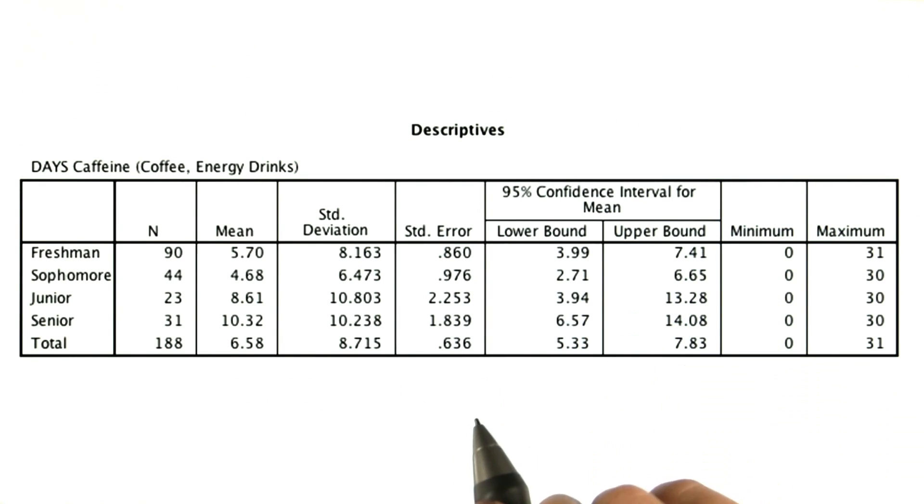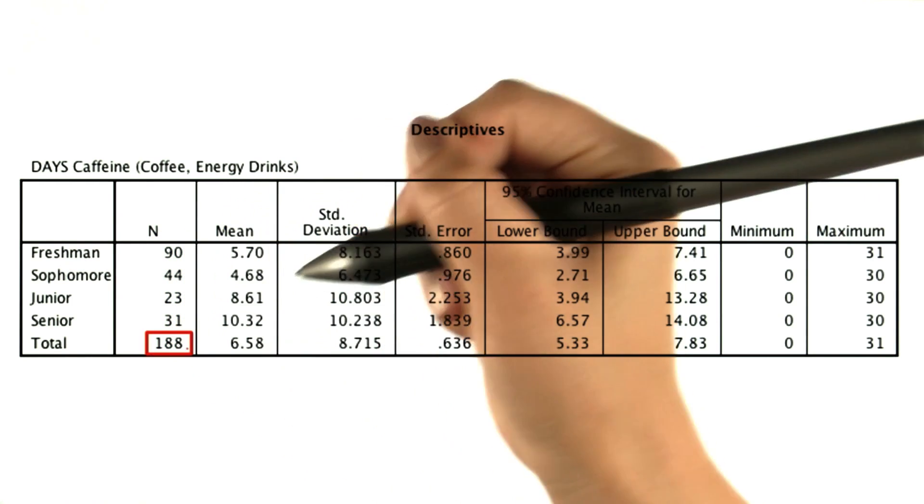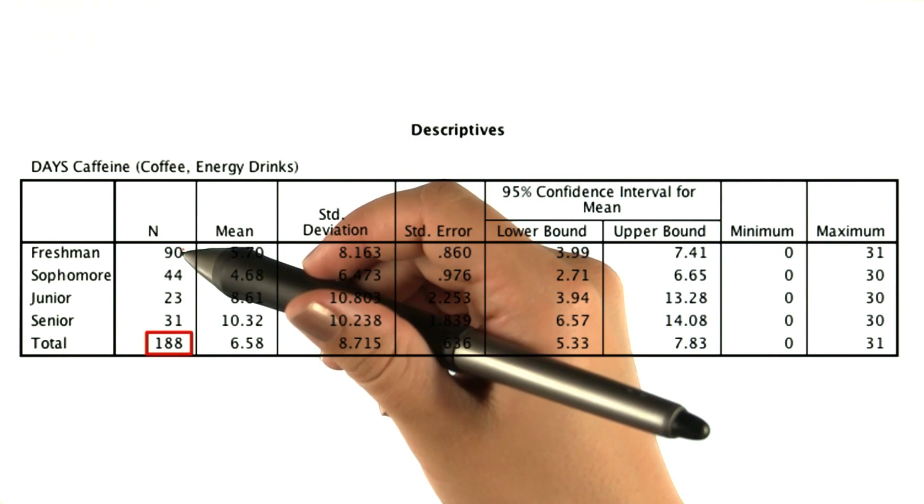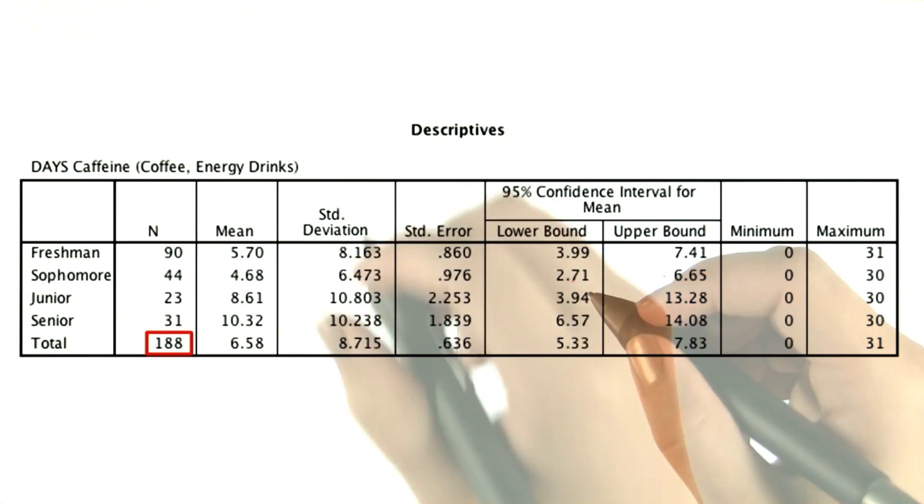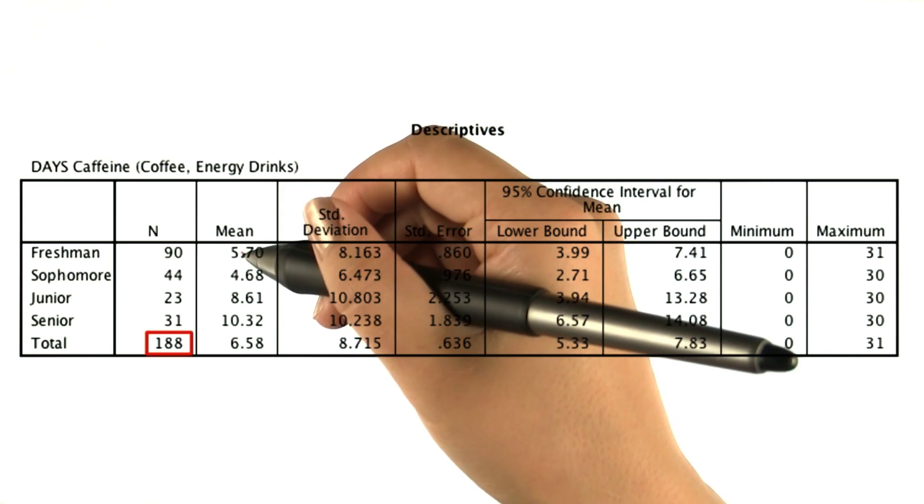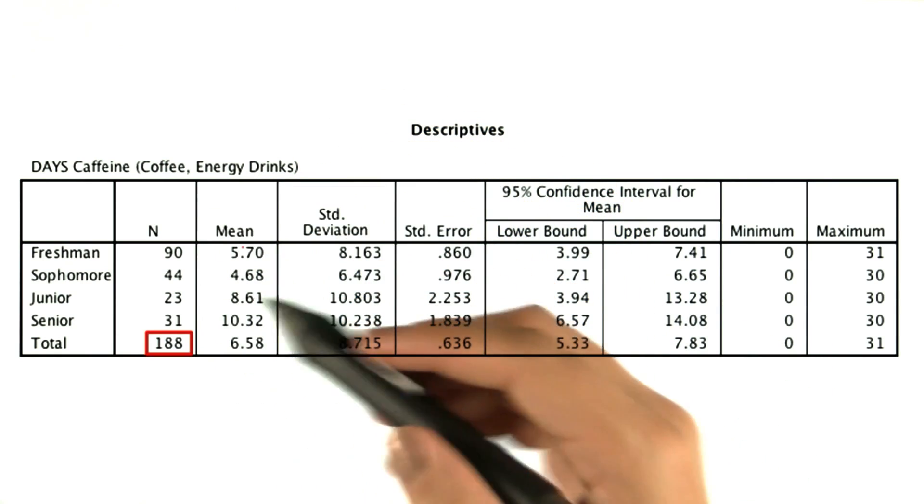This is real data that Dr. Larraway collected from his psychology students at San Jose State University. There are 188 students total: 90 freshmen, 44 sophomores, 23 juniors, and 31 seniors. He asked them to self-report how many days every month they drink caffeine.